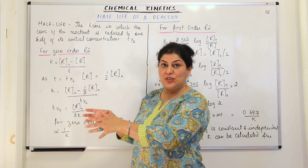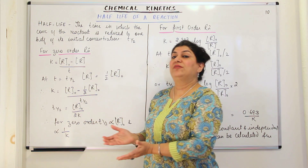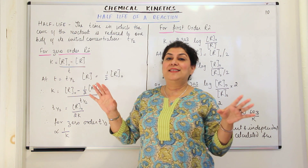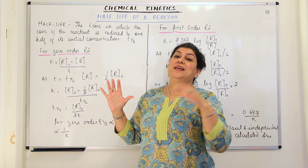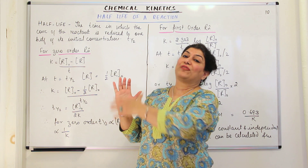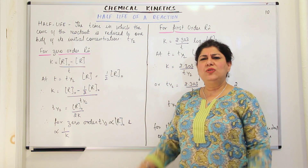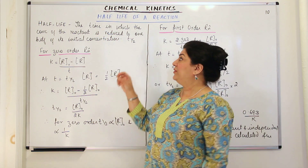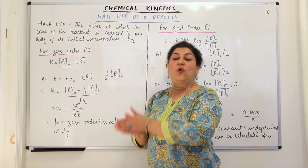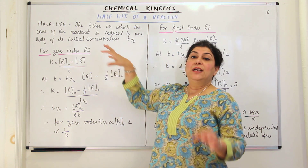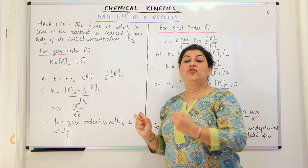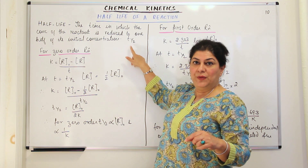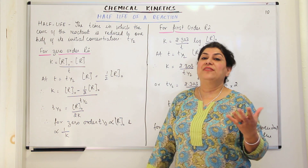When you have the reactant and initially you only have the reactant and no products, when half of the reactant is used up to form the products, the time required is known as the half-life period of that particular reaction. Half-life can be defined as the time in which the concentration of the reactant is reduced to one half of its initial concentration. It is represented by T with a subscript one-half. T½ represents the half-life period.